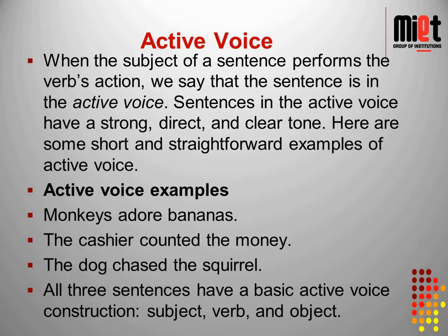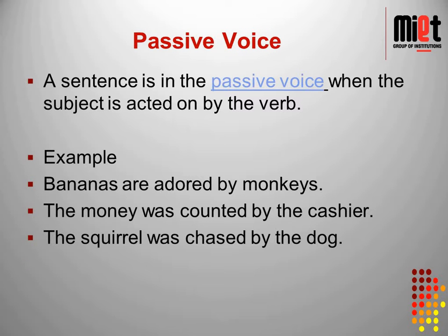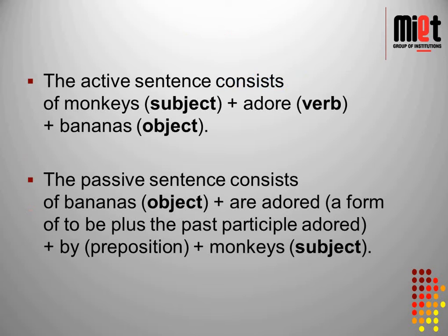A sentence is in the passive voice when the subject is acted on by the verb. For example: 'Bananas are adored by monkeys', 'The money was counted by the cashier', 'The squirrel was chased by the dog'. The passive voice sentence formation consists of object plus past participle form of verb plus preposition 'by' plus subject.